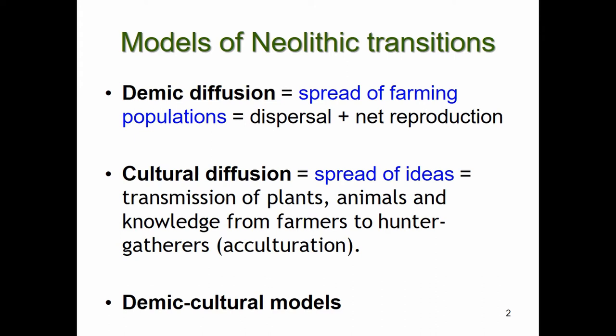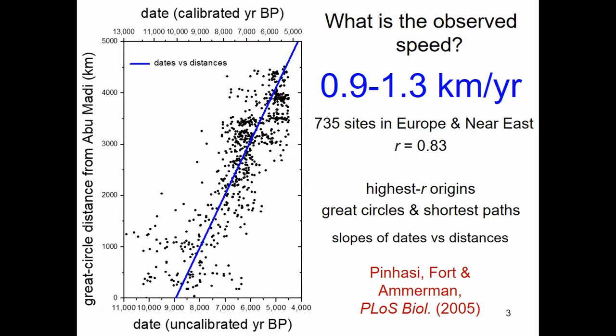To discuss this, we first need to estimate the spread rate of the Neolithic. As is well known, Ammerman and Cavalli-Sforza found that the Neolithic spread in Europe at a rate of about one kilometer per year. A more recent analysis with many more sites gives essentially the same result — between 0.9 and 1.3 kilometers per year.